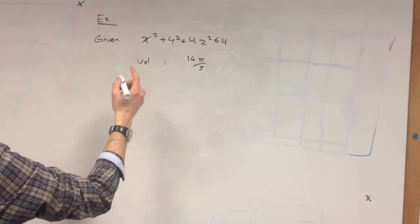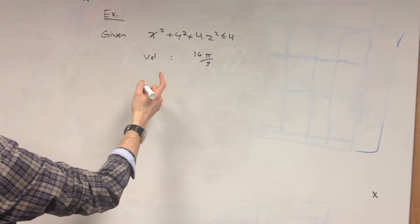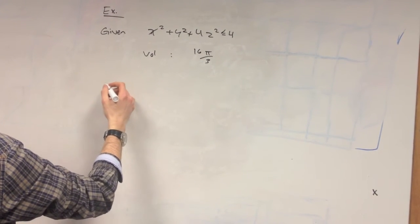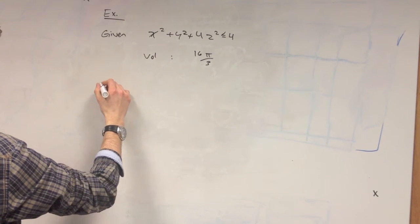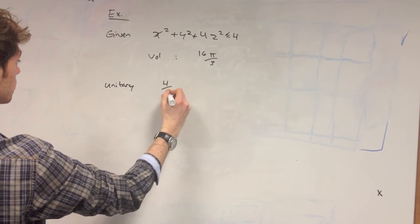Now, how can we solve this without taking a triple integral? Well, one way is by considering a unitary sphere. So the volume of a unitary sphere is 4 thirds pi.